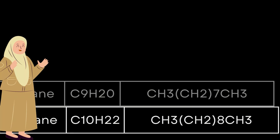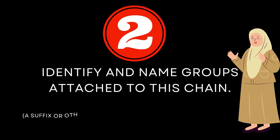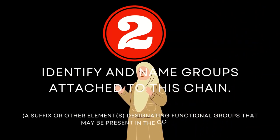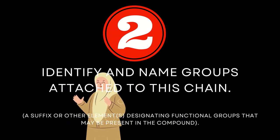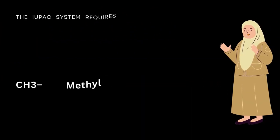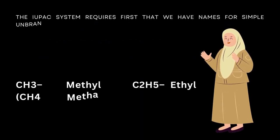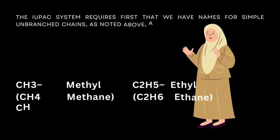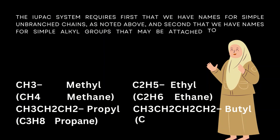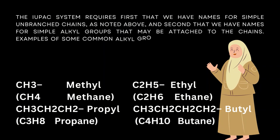Rule number two: identify and name groups attached to this chain. A suffix or other elements designate functional groups that may be present in the compound. The IUPAC system requires first that we have names for simple unbranched chains, and second, that we have names for simple alkyl groups that may be attached to the chains. Note that the -ane suffix is replaced by -yl in naming groups.